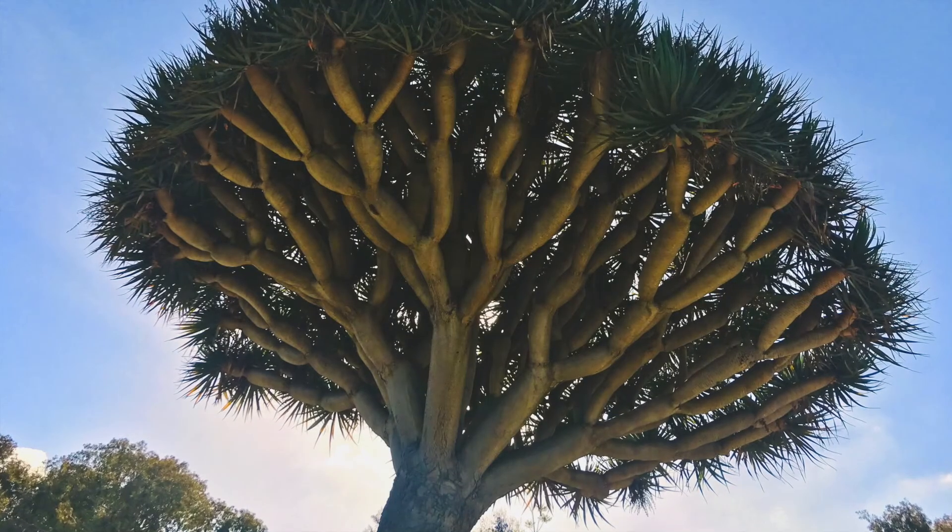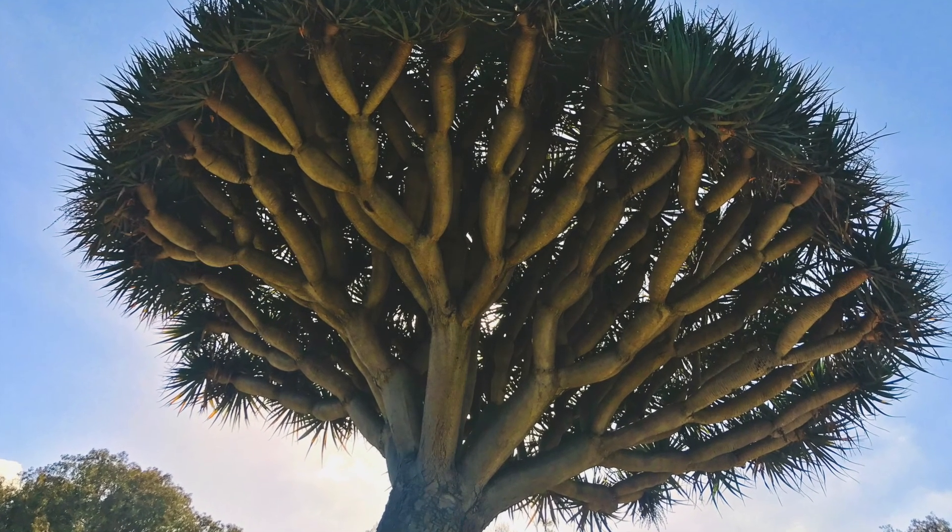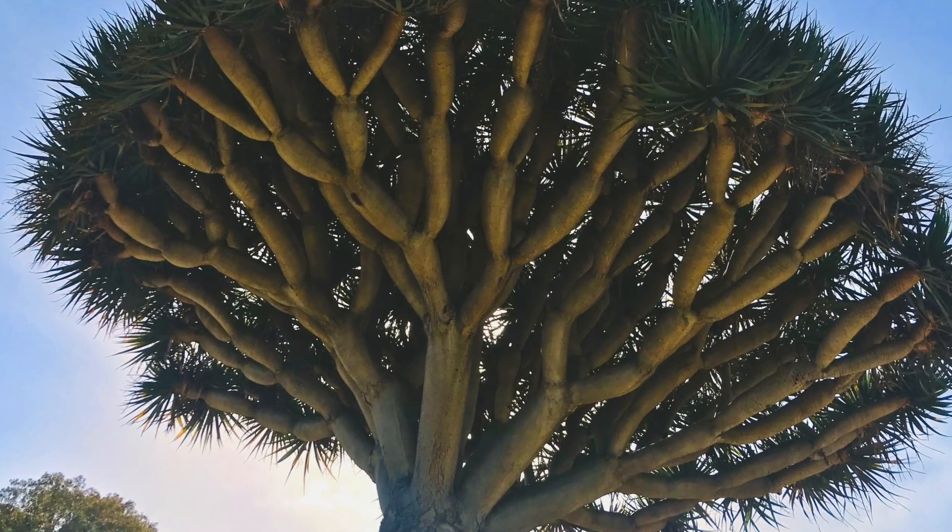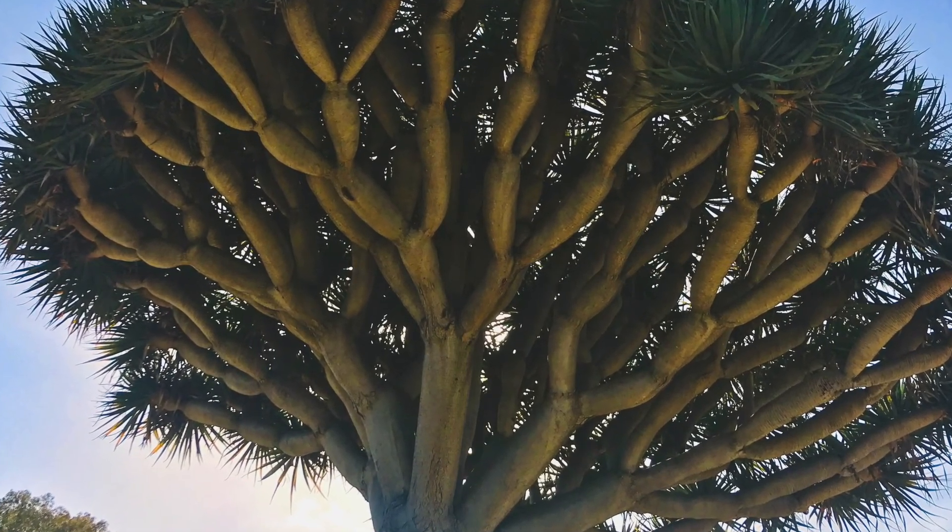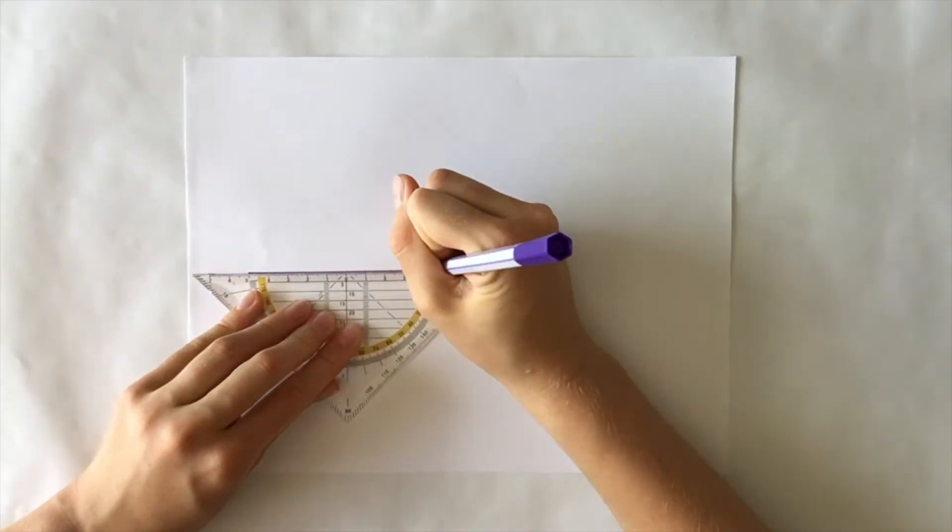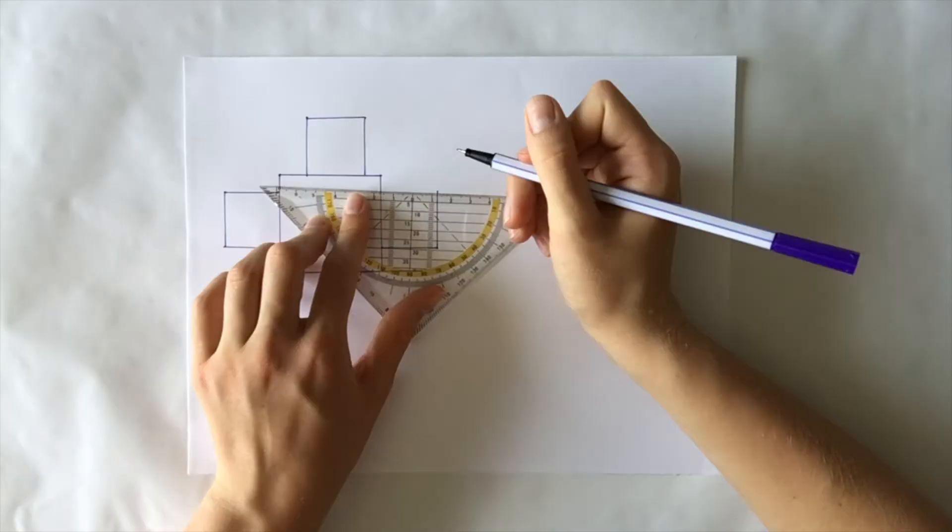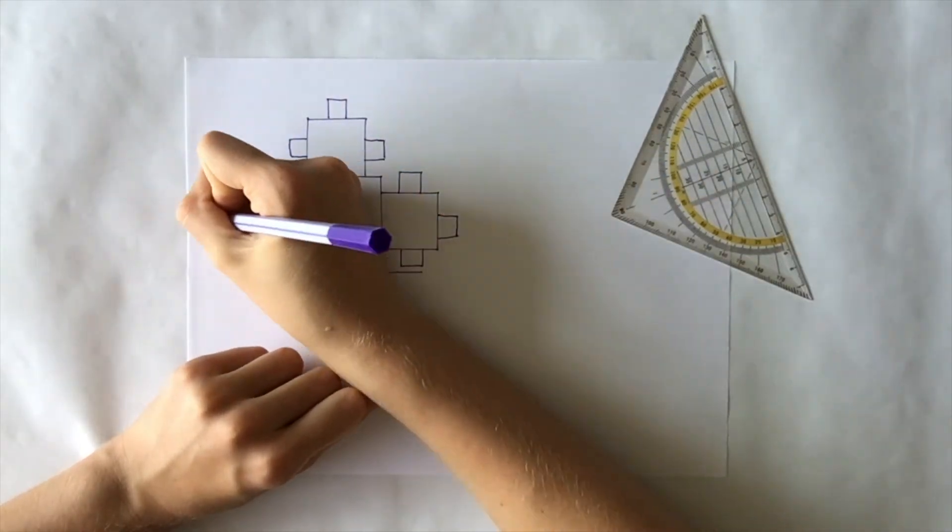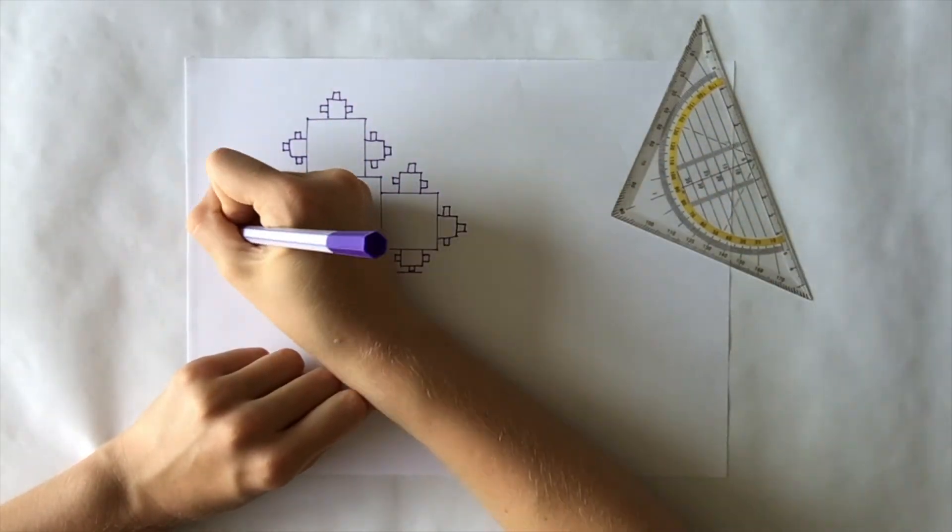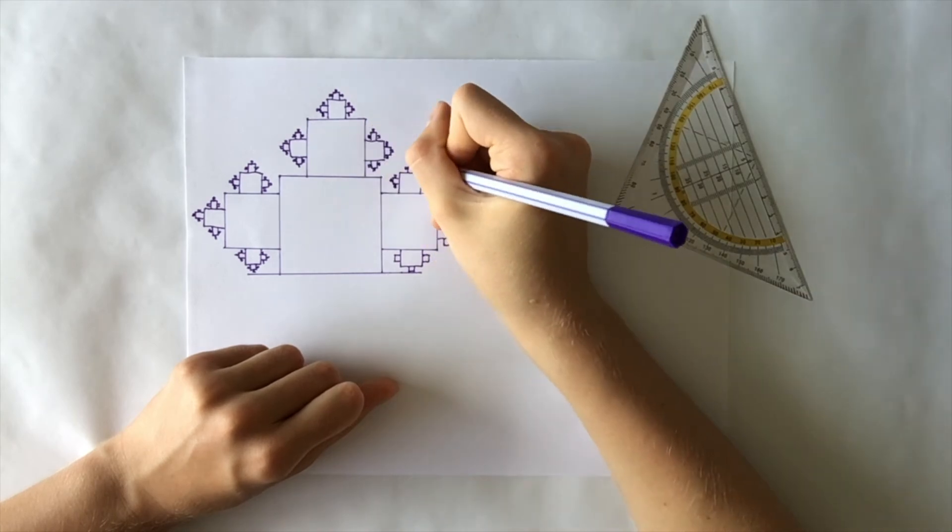This Socotra dragon tree looks particularly like a fractal. The fractals we see in these trees are similar to algorithms. You can also draw your own fractals. Start with a simple shape like a triangle or a square on a line, then on each edge draw an identical shape but smaller. Keep going and soon you will have a fractal.